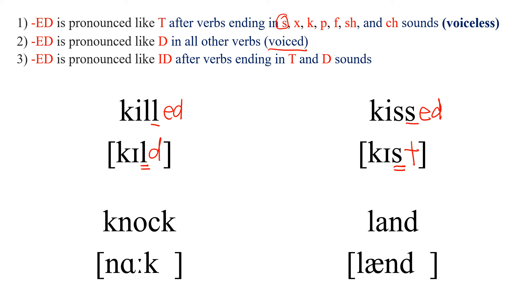Next one: KNOCK. The K is silent. This ends in a consonant, so we put ED. The CK ending makes a K sound, which is one of the voiceless sounds, so we add T and read: KNOCKED.